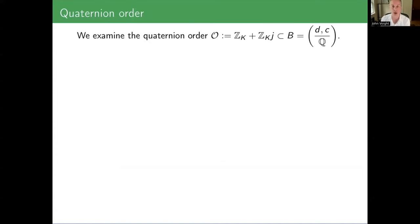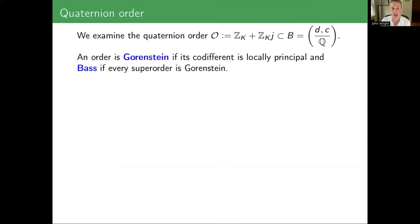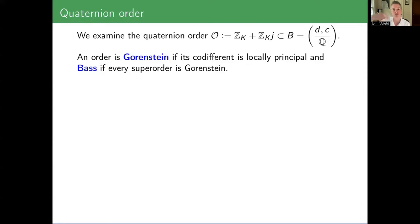I've got my order 𝒪 inside the quaternion algebra B. To balance things out a little bit from the history, I want to show you a little bit of algebra. This slide is meant to convince you that the order is nice and we can do the necessary calculations. The adjectives 'Gorenstein' — that the co-different is locally principal — and 'Bass' — if every order containing 𝒪 is Gorenstein — these are supposed to make you feel very happy. Co-different being locally principal is like the canonical sheaf is invertible, meaning the differential forms are locally free. If you work on cryptography, Bass orders are the ones that allow you to find the maximal order when solving the ideal problem in supersingular elliptic curve cryptography.